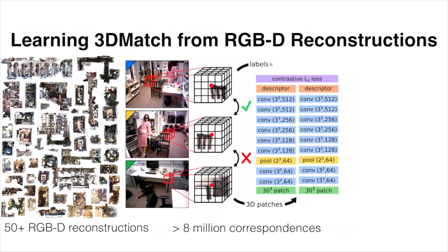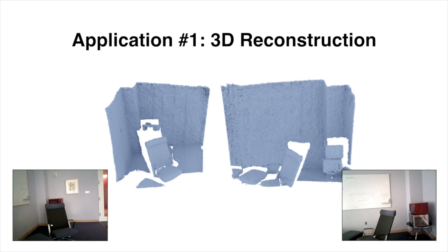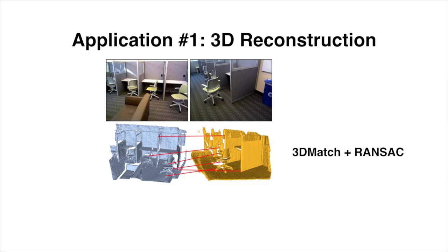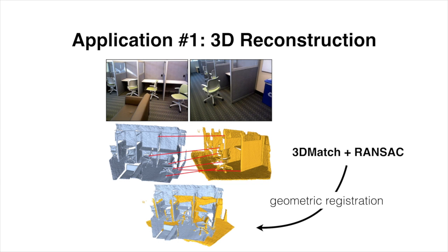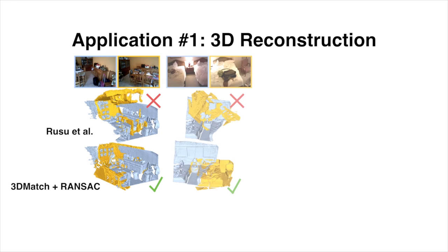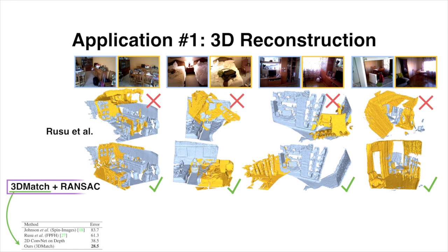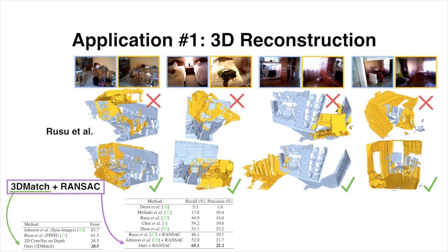We then demonstrate 3DMatch's usefulness in three different applications. For the first application, we show that 3DMatch can be used to improve future 3D reconstruction algorithms by robustly matching local 3D features on the noisy depth scans of scenes. By combining 3DMatch with RANSAC, we can perform geometric registration to successfully align the depth scans and detect loop closures. We show examples where the alignment produced by 3DMatch with RANSAC is better than other geometric registration algorithms. In our experiments, 3DMatch is not only better than other local 3D descriptors, but also when combined with RANSAC is better than many other global geometric registration algorithms.